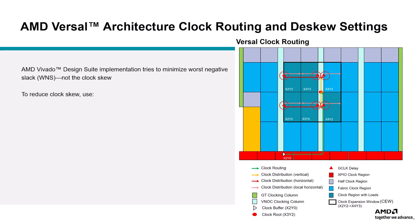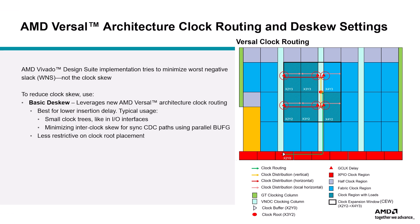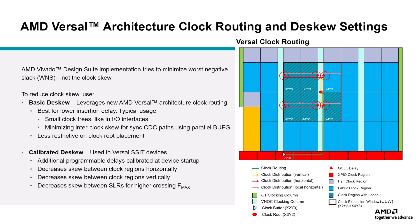To reduce clock skew, Versal devices support two clock routing dSkew schemes. Basic dSkew minimizes insertion delay and is best for I/O interfaces and minimizing inter-clock skew for synchronous CDC paths, implemented with parallel BuffG instead of MBUFG. This scheme is less restrictive on clock route placement, but Vivado still tries to keep the clock expansion window as narrow as possible. The other scheme is calibrated dSkew, where programmable delays are calibrated in hardware during device startup to minimize skew across the clock network at the expense of higher clock insertion delay. Calibrated dSkew is for Versal SSIT devices, minimizing intra-clock skew and maximizing performance on paths between SLRs.